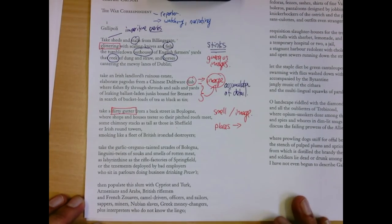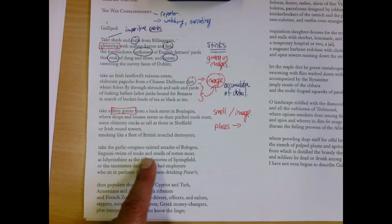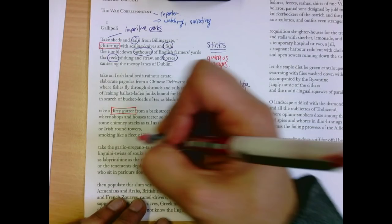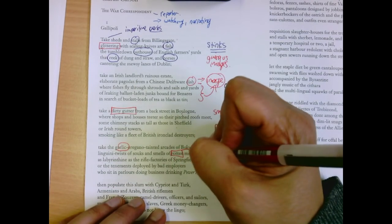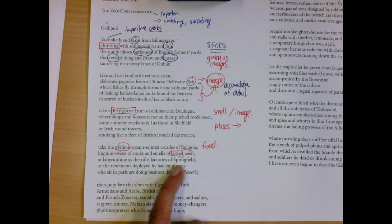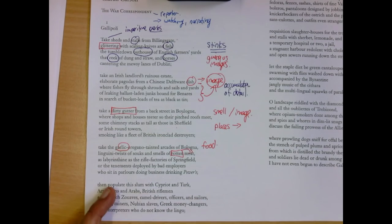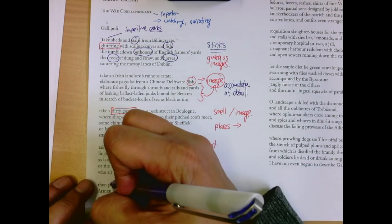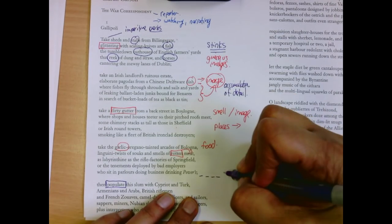Bring the smells, bring the stuff, bring the places. And now we're going to get more detail on the smells. Take the garlic oregano tainted arcades of Bologna, Italy. Linguini twists of souks and smells of rotten meat. So we get food, rotted, rotting meat. Labyrinthine rifle factories of Springfield, or the tenements deployed by bad employers who sit in parlors doing business, drinking powers. Now do the next thing. Now that you've created the place.